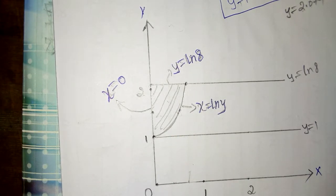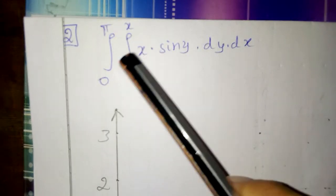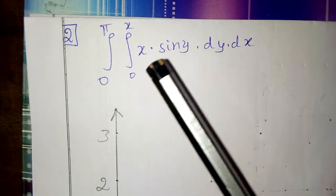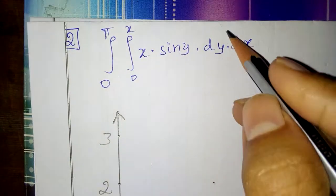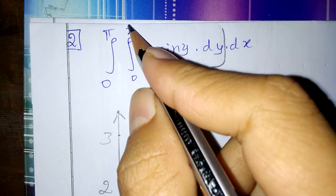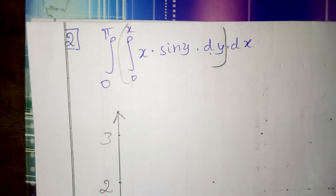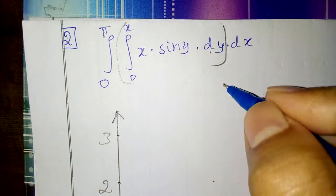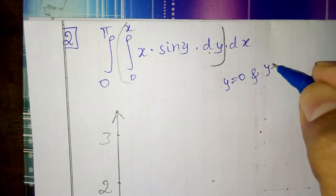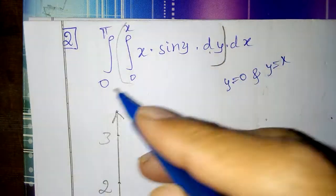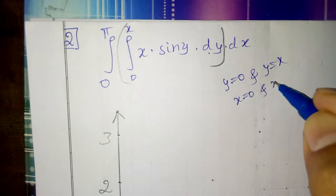Now, what is the second problem? The second problem is: integral from 0 to π, 0 to x, of x times sin(y) dy dx. First, we have to integrate with respect to dy, so these are y limits: y is equal to 0 and y is equal to x. And these are x limits: x is equal to 0 and x is equal to π.